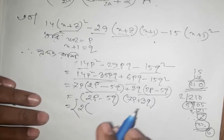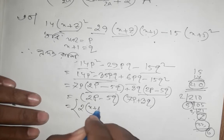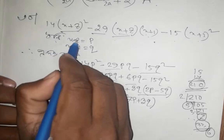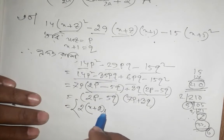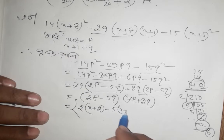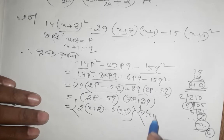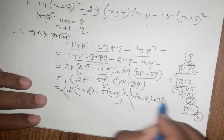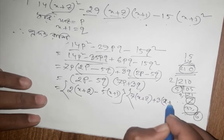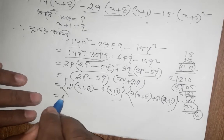p1 times x plus 2, x plus z, p1 times x plus z. q1 times x plus 1, x plus 1. So 7 times p1 times x plus z, and 3 times q1 times x plus 1, x plus 1. Then 2x.